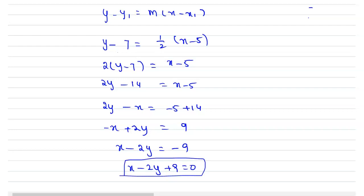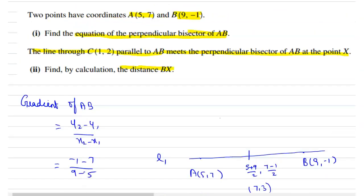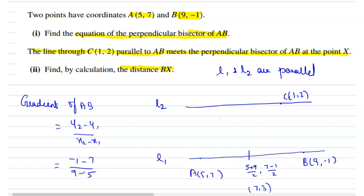Next, we are considering another line which passes through the point C of (1, 2) and is parallel to line L1. That is, L1 and L2 are parallel. And from this, we are drawing one perpendicular bisector which meets the new line L2 at the point X, so we can take the coordinates as (x, y).